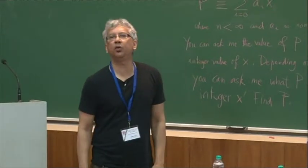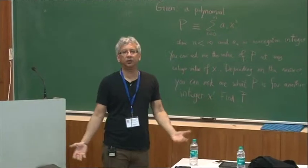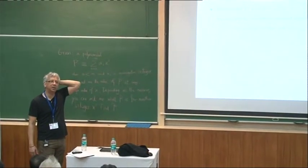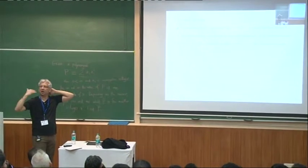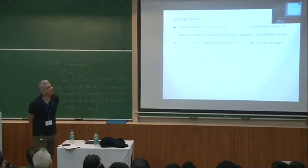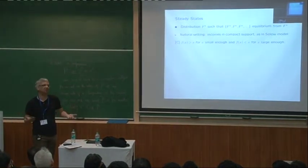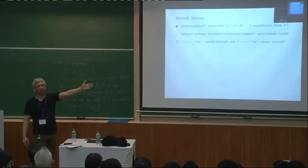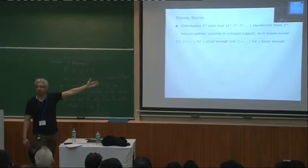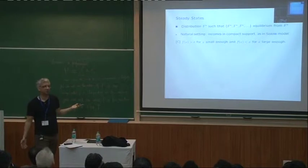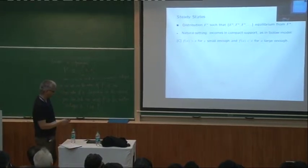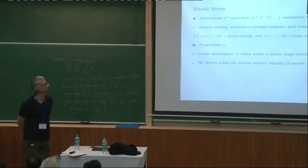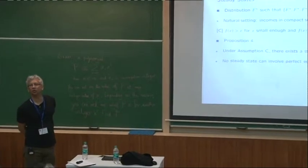So a natural point at which everybody starts and so do we, is to look at the question of steady states. So what's the steady state? Well, it's a distribution F star which has the property that it replicates itself every period. Starting from F star, you get F star every period. What's a good model in which to look at steady states? Everybody knows the answer. It's the Solow model. So let's look at the Solow model. What's the Solow model? Well, it's a production function that starts above the 45 degree line and goes below the 45 degree line. It's concave. You don't have to assume it's concave in what I do but think of a concave typical production function.